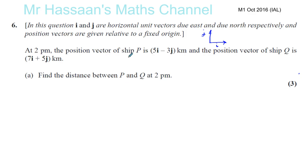At 2pm the position vector of ship P is 5i minus 3j. Now position vector always means given relative to a fixed origin. So let's say this is the origin. The position vector of P means from that origin to P. So at 2pm the ship P is at this position, 5i minus 3j, somewhere down here. That's where P is.